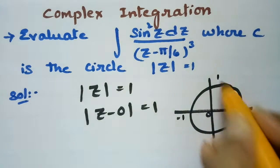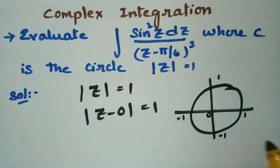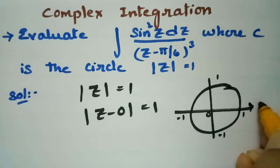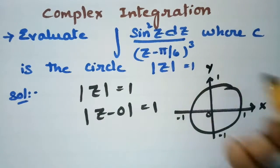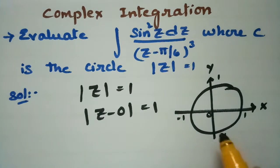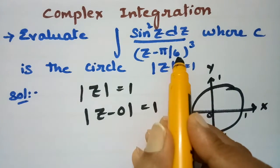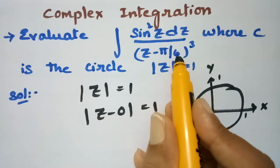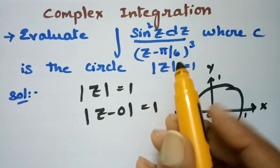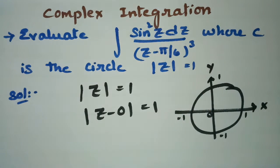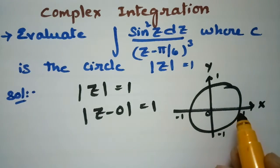On the diagram we have the x-axis, y-axis, and center at the origin, with the circle from -1 to 1. The singular point is π/6. Since π/6 = 3.14/6 ≈ 0.523, this point lies within the circle.